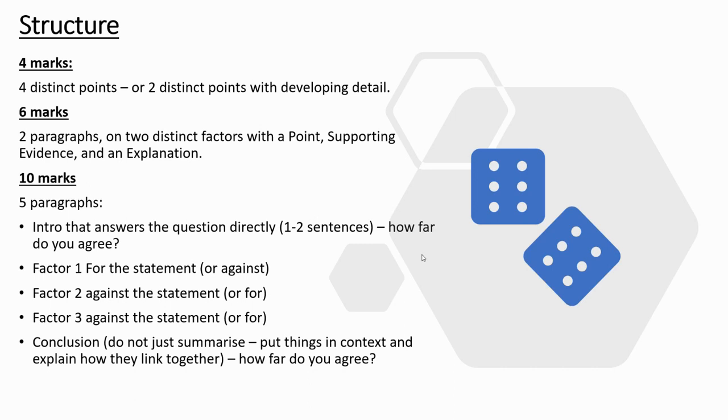Structure then. We've got your four marks. We've been through these before, but to get four marks, you must have four distinct points. And the key word there is distinct. They must be different to each other. You cannot say the same thing in four different ways. You'll only get one mark out of four. Or we can have two distinct points with some developing detail for each. That gets you four marks. Six marks, you're looking for two paragraphs, point evidence explained.